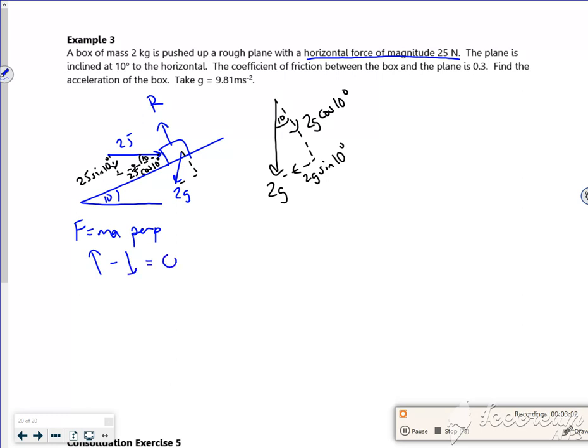So I've got that. So forces going upwards is r. But it's also 25 sin 10. And then forces going down opposing it as a 2g cos 10. And that's equal to 0.